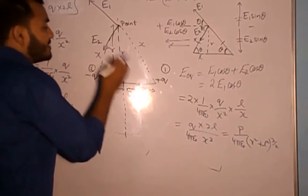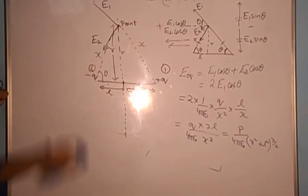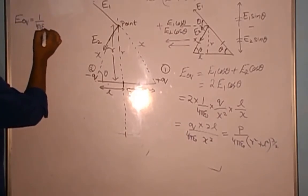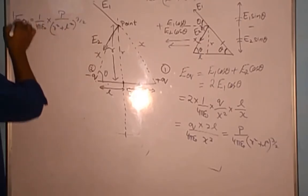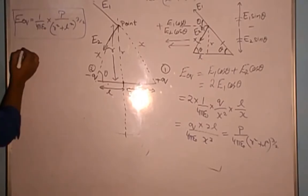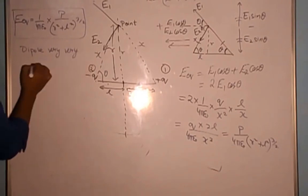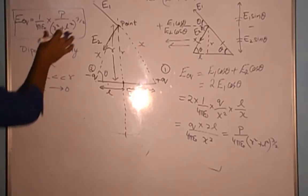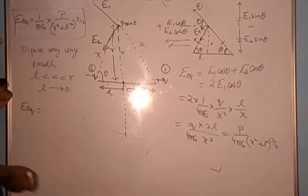So the electric field at the equatorial position of a dipole at distance R from the center is: E = (1/4πε₀) × p / (R² + L²)^(3/2). There is also an extension to this formula. If the dipole is very very small, that means L is much much less than R, so L tends to zero compared to R.